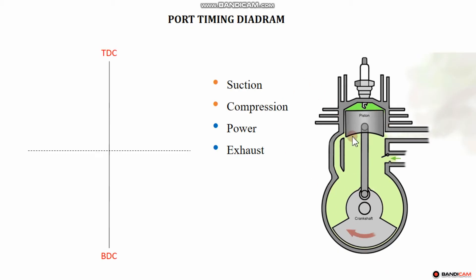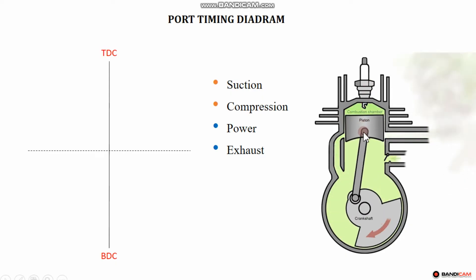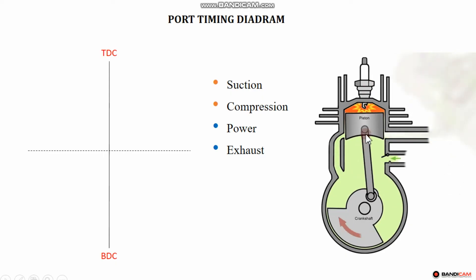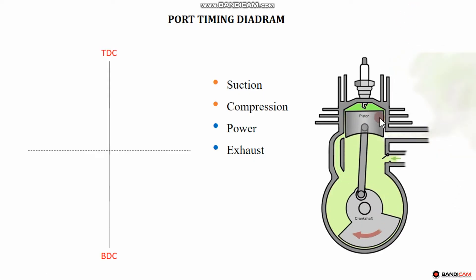We will discuss two-stroke engine working. There are four strokes: suction, compression, power, and exhaust. Suction and compression happen in one piston stroke, and power and exhaust happen in the other. So suction and compression is one piston movement, and at the same time compression occurs. Power and exhaust is the second stroke.